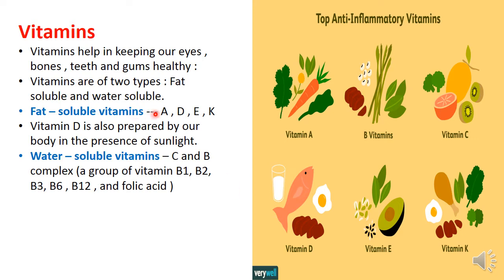Fat-soluble vitamins can be stored in the fat tissues of the body and used whenever the body needs. But water-soluble vitamins cannot be stored and must be regularly supplied through food — that is why we need to eat enough vegetables and fruits daily. Lack of vitamins in the body affects organ functioning and causes deficiency diseases.